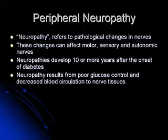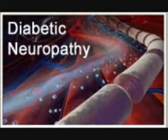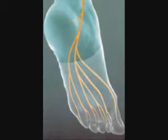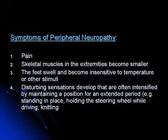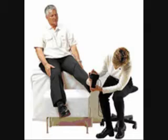Peripheral neuropathy refers to pathologic changes in nerves. These changes can affect motor, sensory, and autonomic nerves. Neuropathy is developed 10 or more years after the onset of diabetes, and results from poor glucose control and decreased blood circulation to nerve tissue. Symptoms include pain, skeletal muscles in the extremities become smaller, the feet swell and become insensitive to temperature or other stimuli, and disturbing sensations develop that are often intensified by maintaining a position for an extended period.